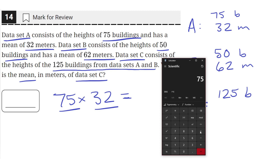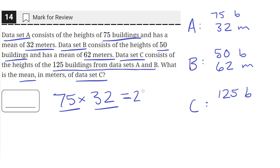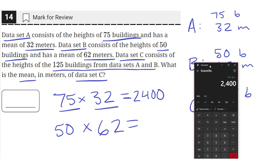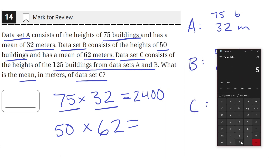So 75 times 32 is equal to 2400. Then we do the same thing for data set B, multiplying the number of buildings by their mean height to get the total height of all the buildings in data set B added together. So 50 times 62 is equal to 3100.